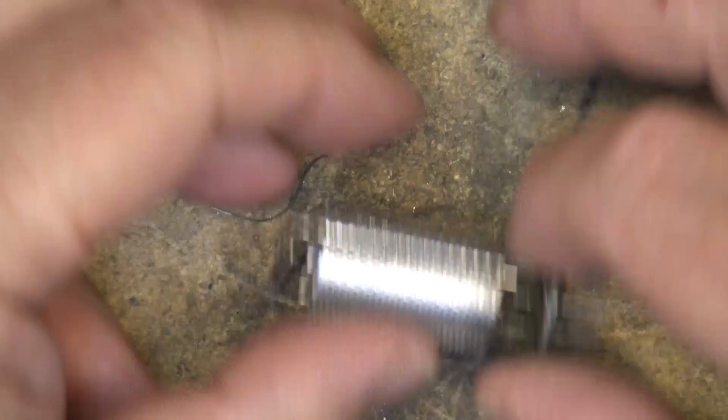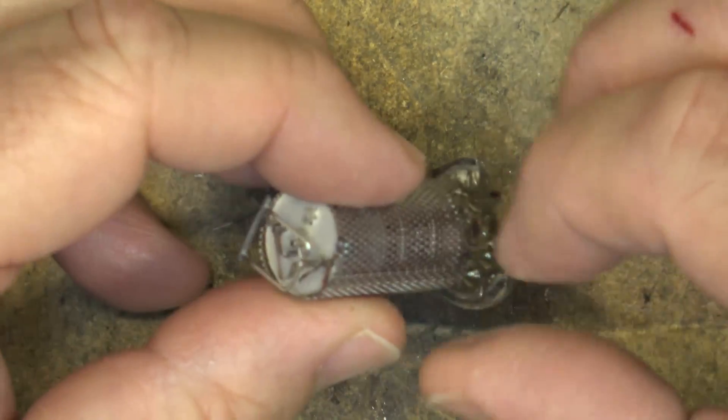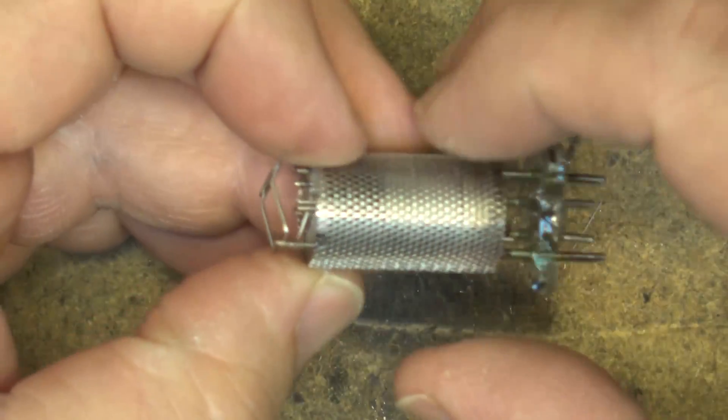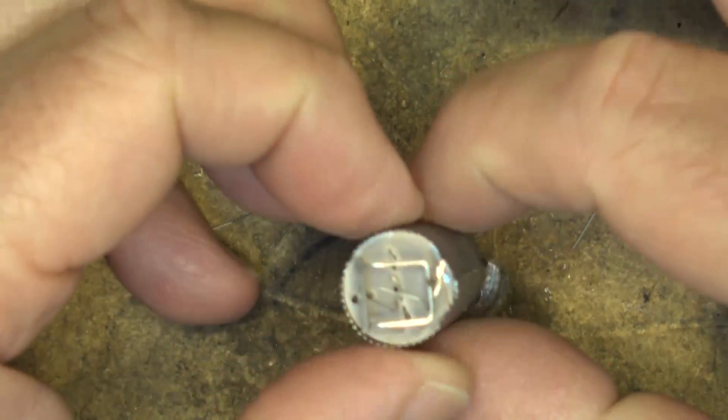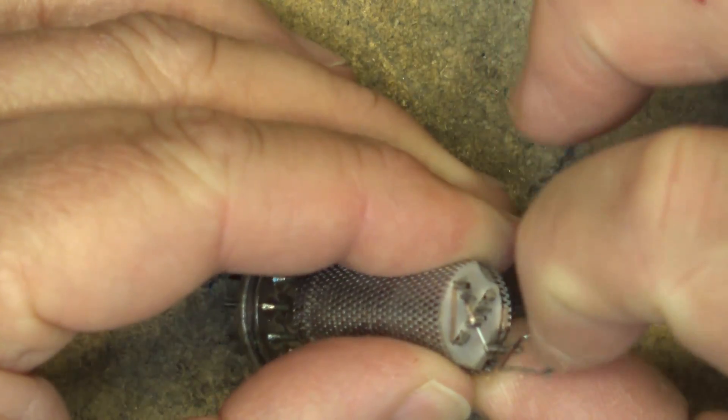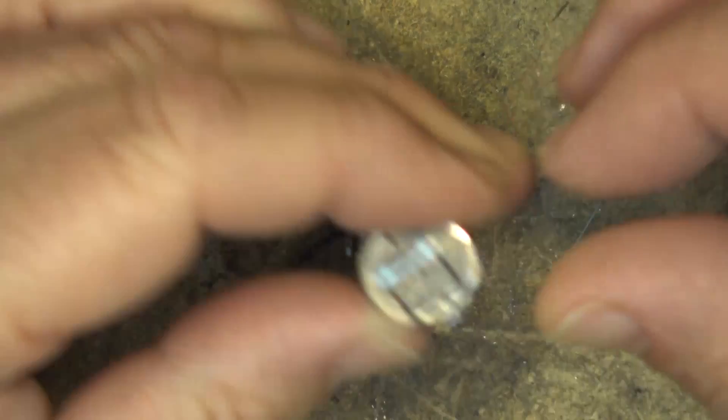But here's the part that's interesting, the structure of the actual tube itself. So it's got a screen here. This is the plate. But unlike some, it's a mesh type plate. And here's the getter on the top here that they would flash to keep any of the oxygen out. It would keep the tube itself under vacuum.